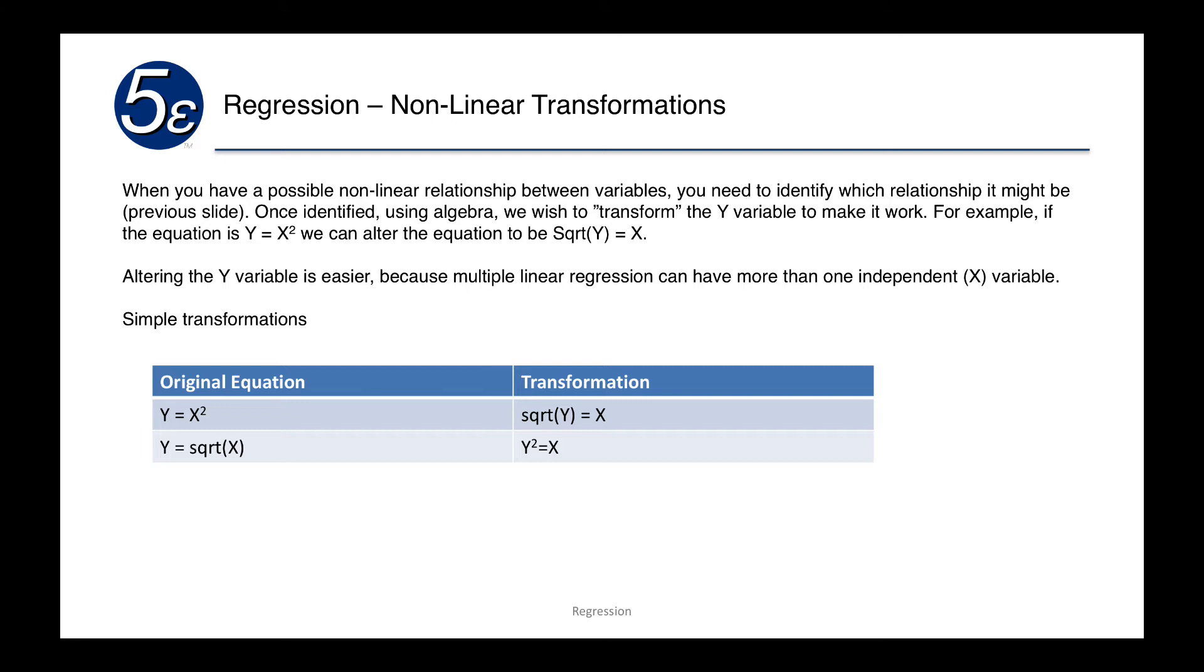Altering the y variable is easier because multiple linear regression will have more than one independent x variable. We can't necessarily tell which variable is causing it, but because the response looks curved, we can actually transform that. Another transformation would be y equals the square root of x and we could square both sides so we would have y squared equals x.